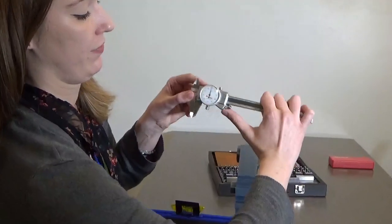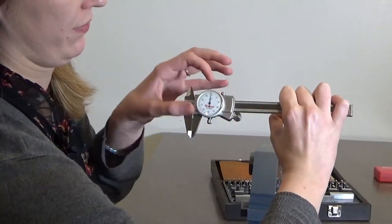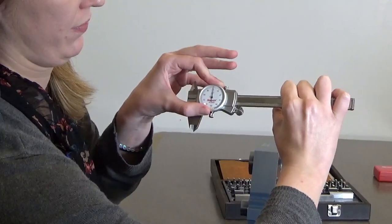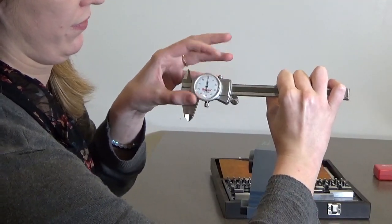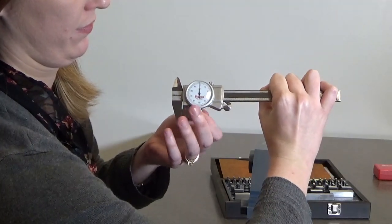Here we have the Starrett caliper again. She's showing it, closing the jaws, opening the set screw, and turning the bezel so that the zero matches up properly with the pointer. And then she tightens back up the set screw.